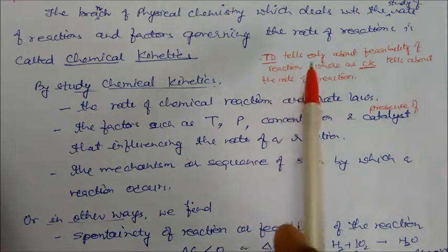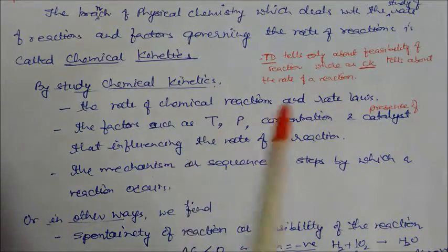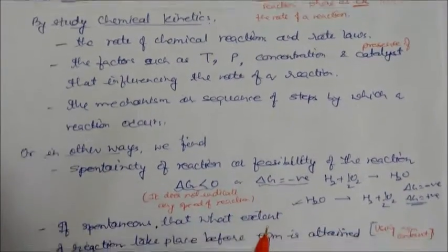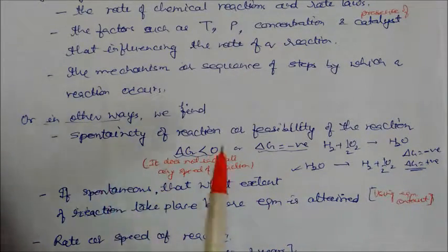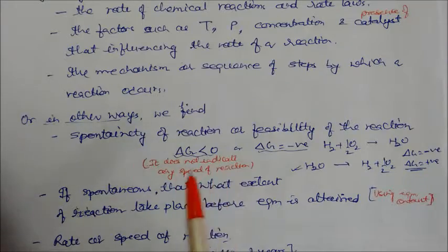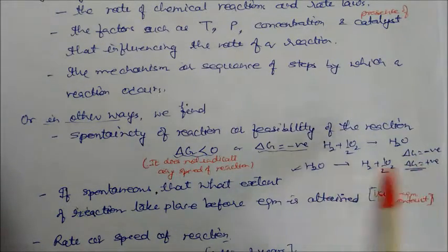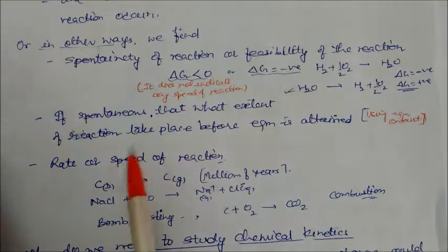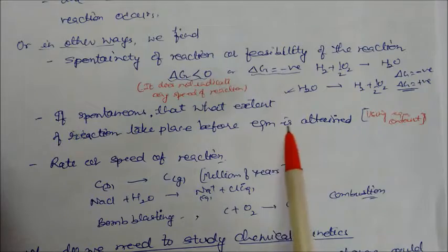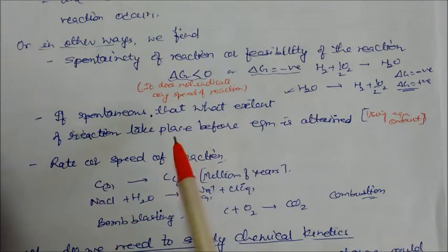In thermodynamics, we study the feasibility of a chemical reaction, whereas chemical kinetics tells us the rate of the reaction — these are different quantities. Through chemical kinetics, we study spontaneity or feasibility, which is related to ΔG being less than zero. ΔG does not indicate the speed of the reaction — it should simply be negative. For example, hydrogen reacting with oxygen gives water, where ΔG is always negative. If ΔG is positive, the reaction requires some external agency. We also study the extent of reaction before equilibrium is attained, using the equilibrium constant.